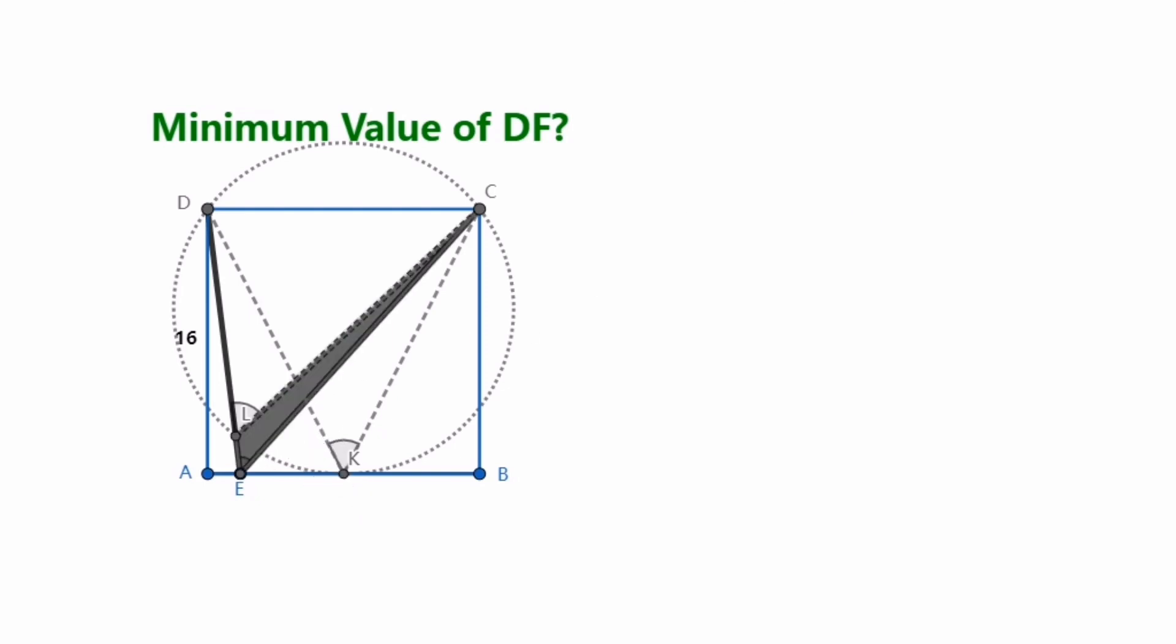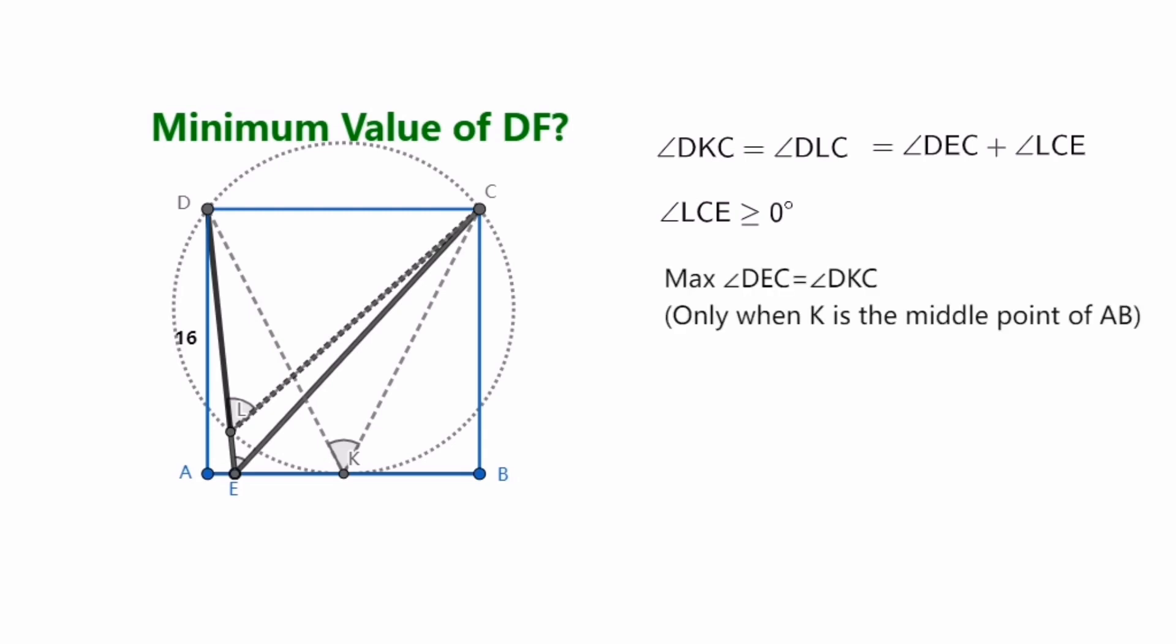Let's go ahead and look at it in the triangle LEC. Angle DLC is the outer angle of triangle LEC. So this angle is equal to this angle plus this angle. Angle DKC is equal to angle DLC, so that's equal to angle DEC plus angle LCE. And the angle LCE is obviously greater than or equal to 0. Its minimum is 0. Let's write down the value of angle LCE. The angle LCE is greater than or equal to 0. And then we can come to the conclusion the maximum value of angle DEC is equal to angle DKC. And only if K is the midpoint of segment AB.